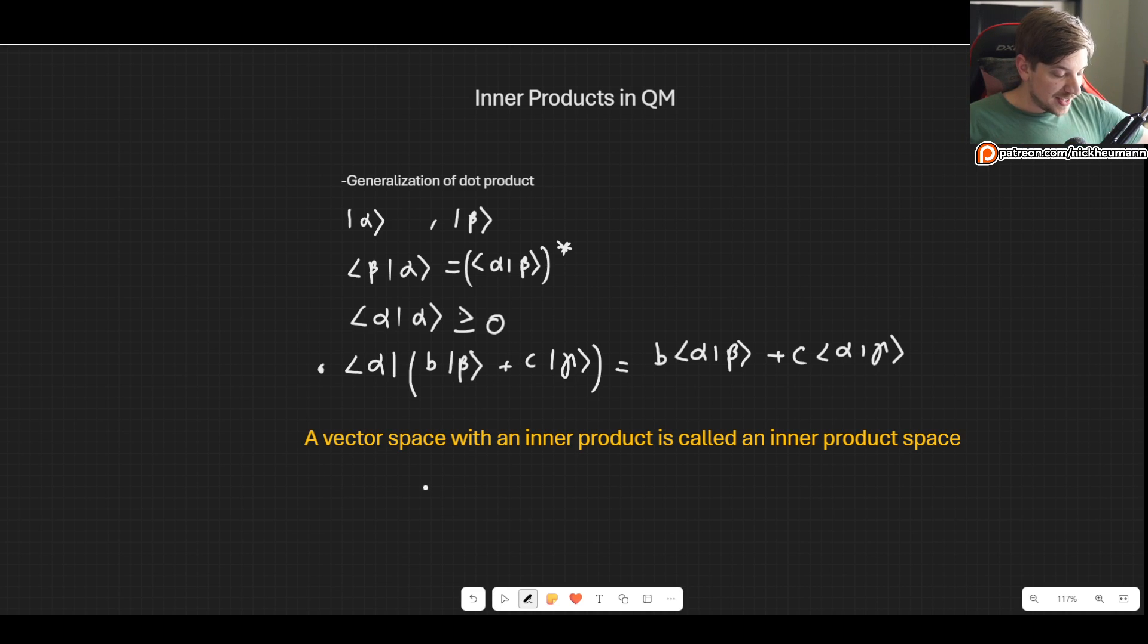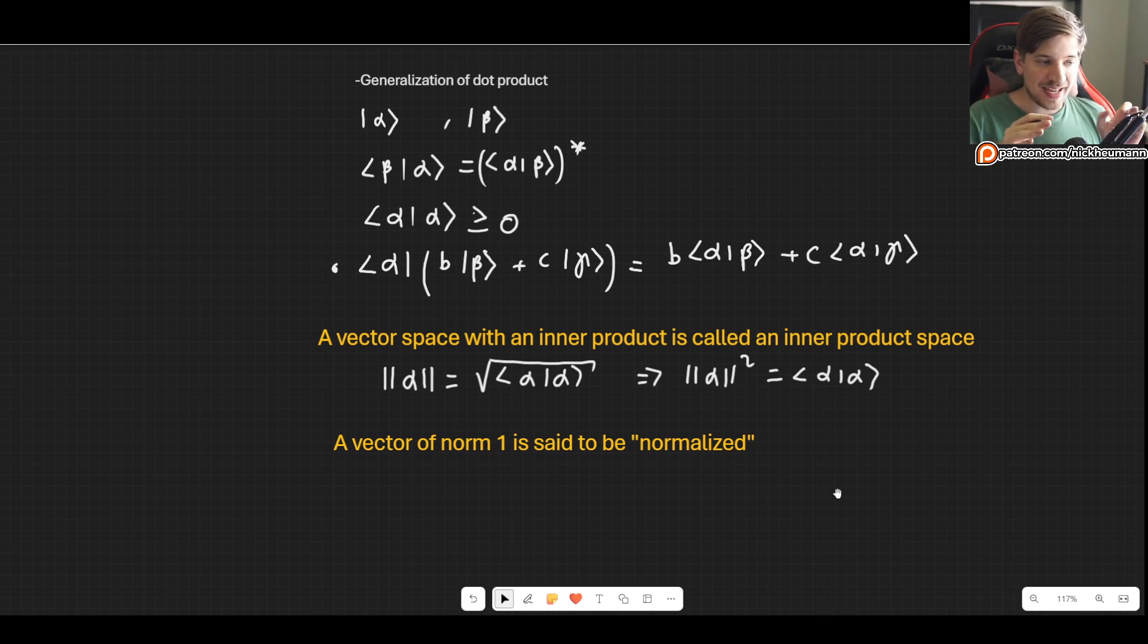Since we know that the inner product of a vector with itself is always positive definite, always greater or equal to zero, we can define it to be the norm of a vector. The norm of a vector alpha is the square root of the inner product of alpha with itself. Or said another way, the norm squared is the inner product of alpha with itself. This is a generalization of the notion of length.